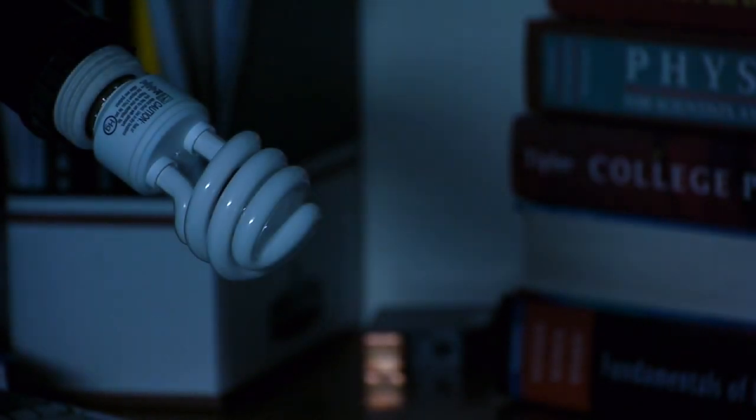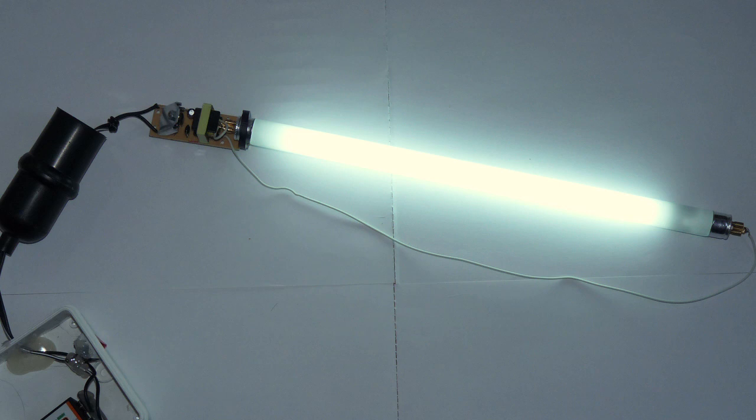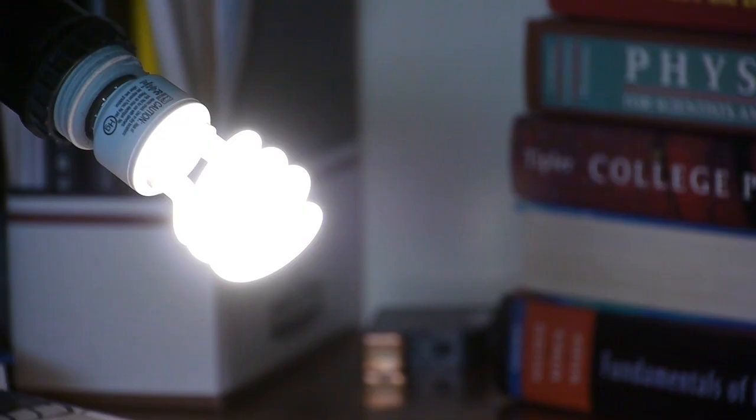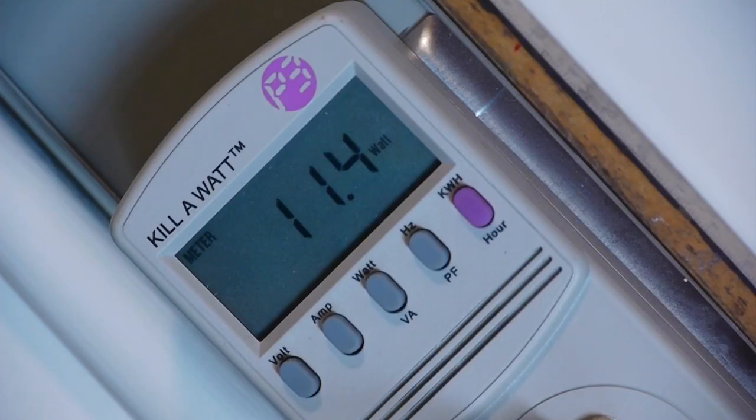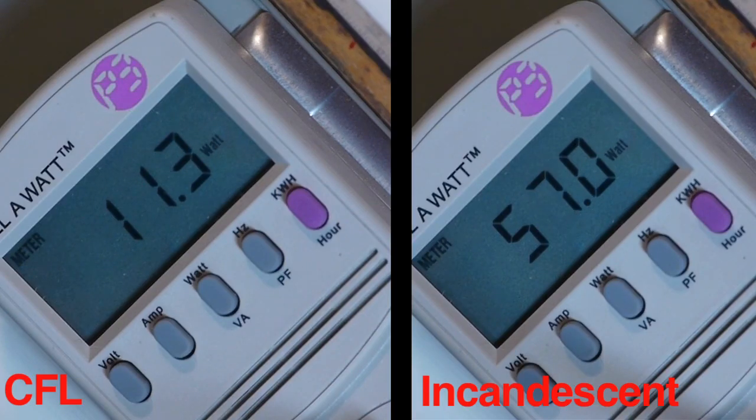This is a compact fluorescent light, or CFL. For many years, fluorescent lights were only available in long, unwieldy tubes, but in recent years, small home versions have become available. As you can see, the CFL only uses 11 watts to create the same level of illumination as the incandescent and halogen lights, making it five times more efficient.